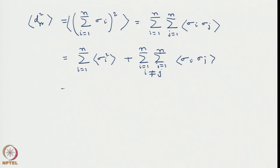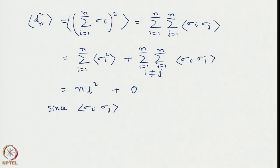From the property we have seen, the expectation of sigma_i squared is L squared. So there will be n such terms, giving n times L squared. The cross-correlation term is 0 because of mutual independence — the process is i.i.d. So we can write that term as 0, since the expectation of sigma_i times sigma_j equals 0 for i not equal to j, which is the independently identically distributed random variable property.